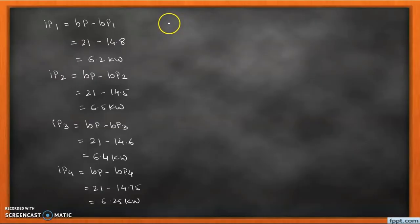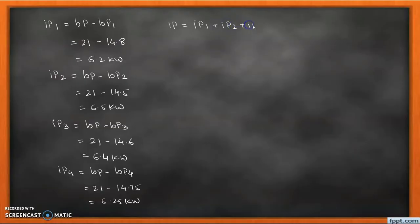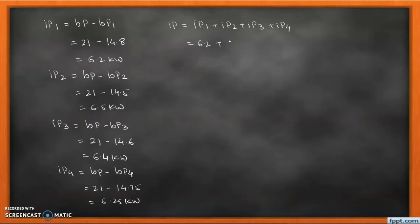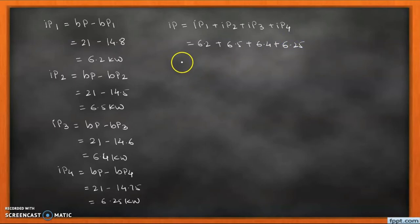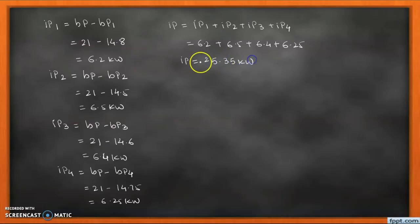Using all the individual indicated powers from each cylinder, the total indicated power equals IP1 + IP2 + IP3 + IP4 = 6.2 + 6.5 + 6.4 + 6.25 = 25.35 kilowatt. This is our first finding for this numerical.